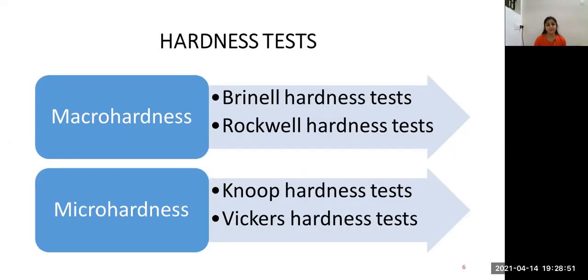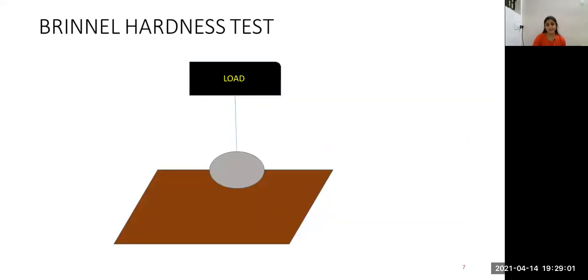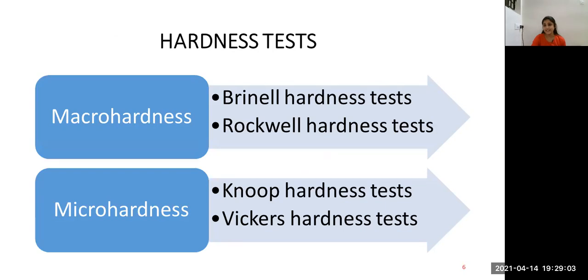Hardness test is divided into macro-hardness and micro-hardness. Under macro-hardness, we have Brinell hardness and Rockwell hardness tests. Under micro-hardness, we have Knoop hardness and Vickers hardness tests. If the load is less than 9.8 N and the indentation depth is less than 19 microns, it is classified under micro-hardness tests.